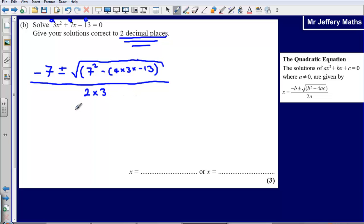Now what I would suggest doing, instead of trying to plug all of this into your calculator at the same time, break it down so it's a little bit easier to work out. Let's start evaluating some of this. First of all, 7 squared, let's say that's 49. And then we've got 4 times 3 times negative 13, so 12 times negative 13, that's going to give me minus 156.